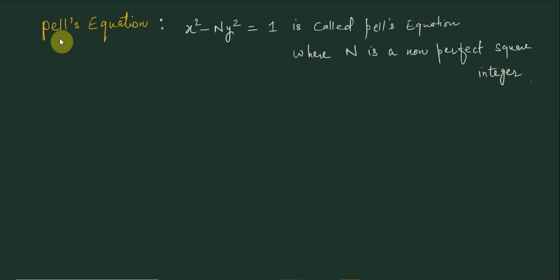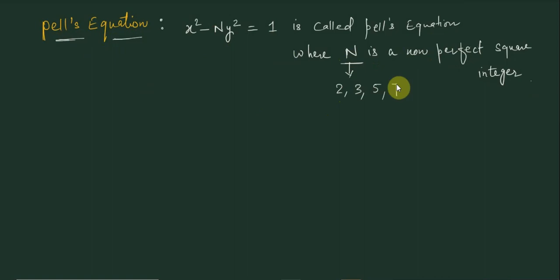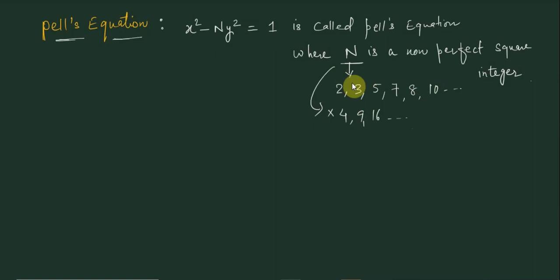The equation of the form x² - ny² = 1 is called Pell's equation, where N is a non-perfect square integer. That is, N may be 2, 3, 5, 7, 8, 10, and so on. But N cannot be 4, 9, 16 — N must never be a perfect square, but may be a non-perfect square integer.